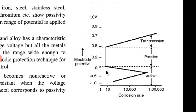When it reaches that particular potential, the corrosion rate starts decreasing and becomes almost constant at that point. This continues even if the potential is increased further up to a certain point — this range is called the passive range. After that, if the potential is increased further, the corrosion rate increases again.